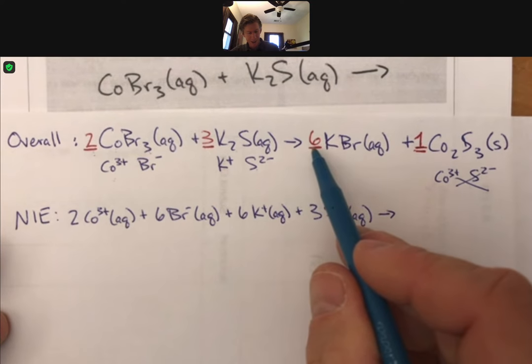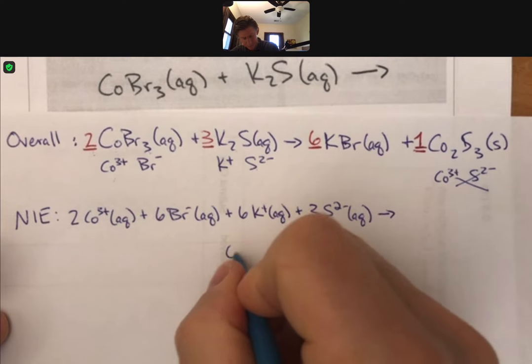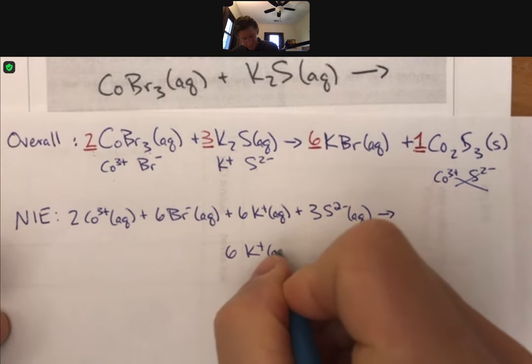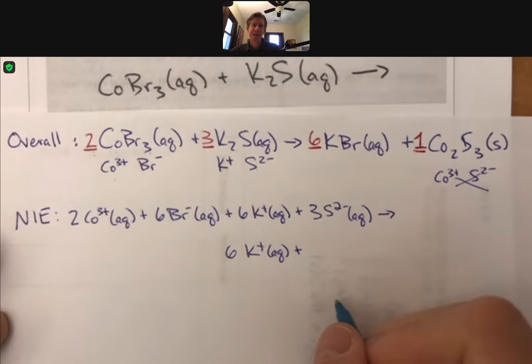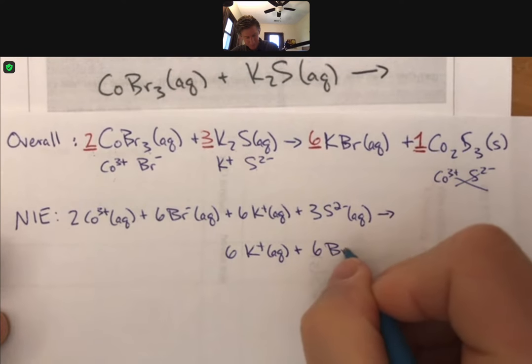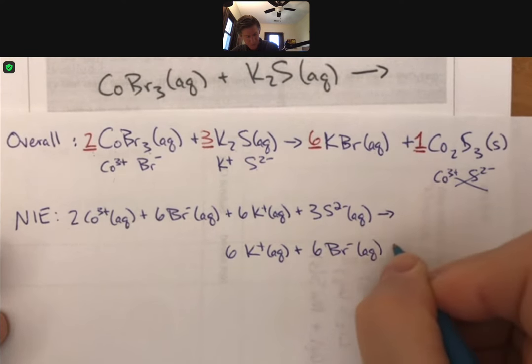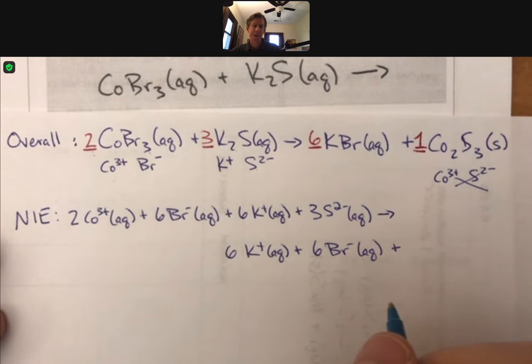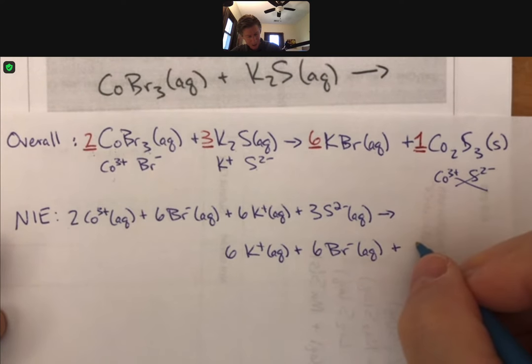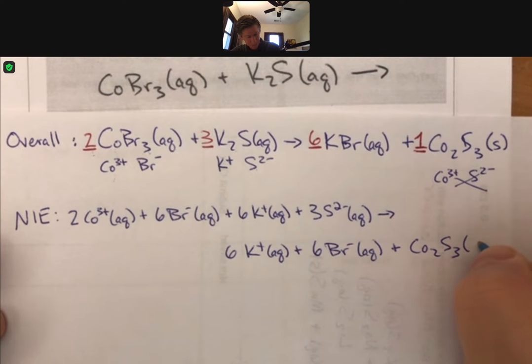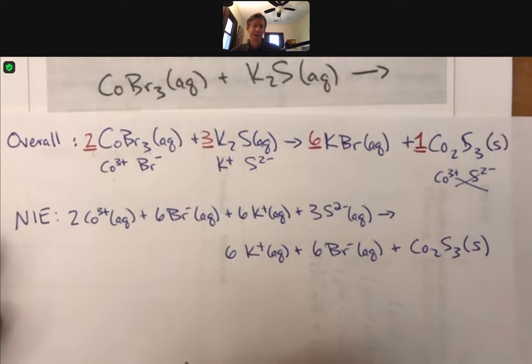And since I'm almost out of space, I am going to put my products down here. On my product side, I have six aqueous potassium ions, six aqueous bromide ions. And don't break up solids, liquids, or gases. I just have cobalt two sulfide three solid.